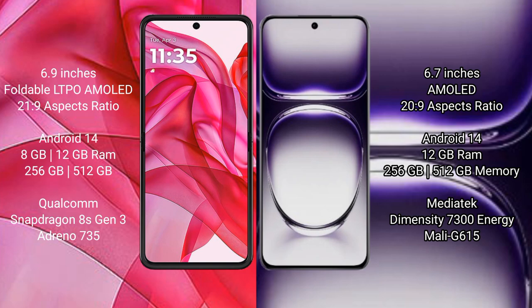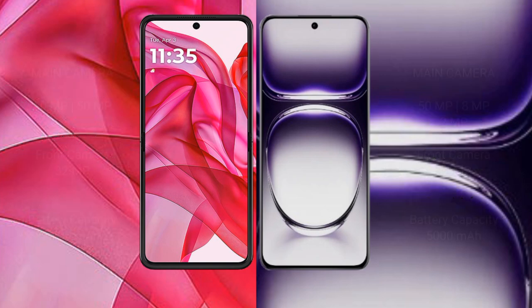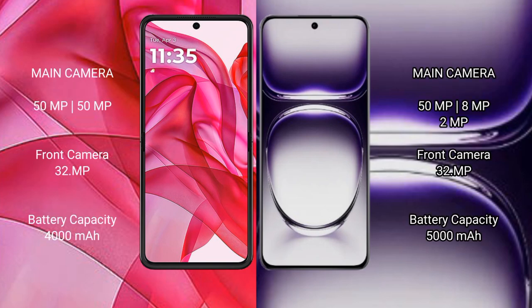The OPPO Reno 12 comes with 12GB RAM and 256GB or 512GB internal storage, powered by a MediaTek Dimensity 7300 processor with Mali-G615 GPU. The Motorola Razr 50 Ultra features a dual rear camera setup with a 50MP main camera and a 32MP front camera.